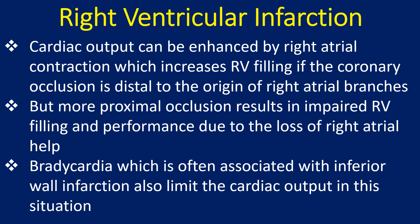Cardiac output can be enhanced by right atrial contraction, which increases RV filling if the coronary occlusion is distal to the origin of right atrial branches. But more proximal occlusion results in impaired RV filling and performance due to the loss of right atrial contribution. Bradycardia, which is often associated with inferior wall infarction, also limits cardiac output in this situation.